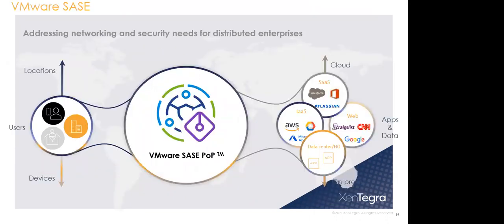The SASE Point of Presence (PoP) is the server infrastructure sitting between users, devices, and locations on one side, and all applications and data centers on the other. When users want to access applications, the user request moves through the SASE PoP, which provides the security layer and accessibility layer, and then connects to the applications. All requests and responses go through the SASE PoP, which takes action based on the rules and policies configured on the PoP.